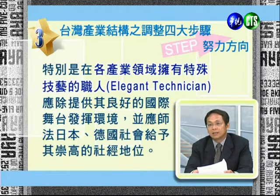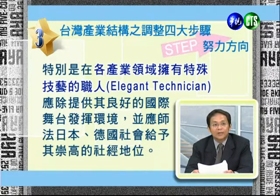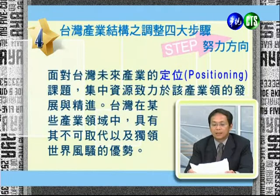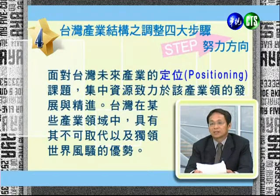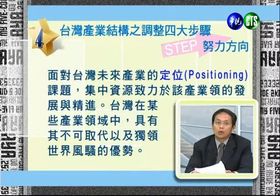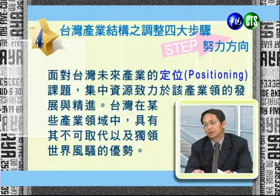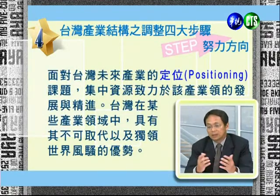E是Expert Technician，應在各產業領域多把資源花在培養有技術的職人，提供良好的國際競爭舞台，仿效日本、德國給予崇高的社會地位。P是Positioning台灣的定位，希望把資源集中在適合台灣的產業。